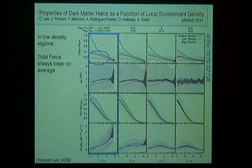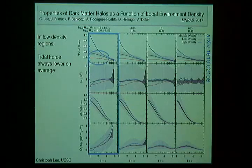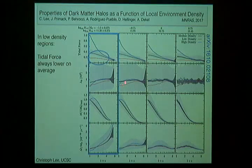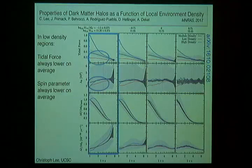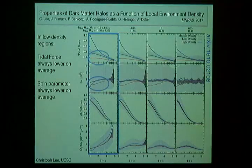Focusing on the lowest mass bin: halos in low density regions at redshift zero have lower tidal force, and this is consistently the case when we follow these halos back in time. Halos in low density regions have always had lower tidal forces, at least at the median level, compared to halos in median density regions. Similarly, they have lower spin parameters, which has also consistently been the case.